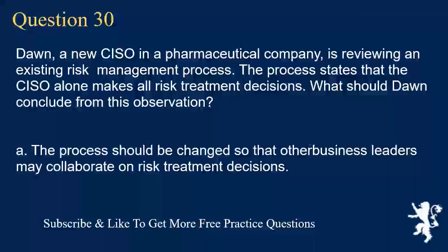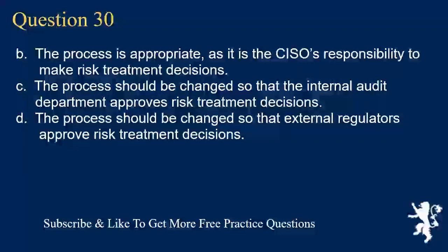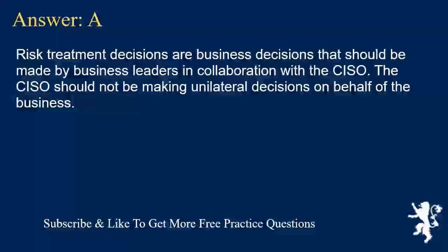Question 30. Don, a new CISO in a pharmaceutical company, is reviewing an existing risk management process. The process states that the CISO alone makes all risk treatment decisions. What should Don conclude from this observation? A. Process should be changed so that other business leaders may collaborate on risk treatment decisions. B. The process is appropriate, as it is the CISO's responsibility to make risk treatment decisions. C. The process should be changed so that the internal audit department approves risk treatment decisions. D. The process should be changed so that external regulators approve risk treatment decisions. Answer A. Risk treatment decisions are business decisions that should be made by business leaders in collaboration with the CISO. The CISO should not be making unilateral decisions on behalf of the business.